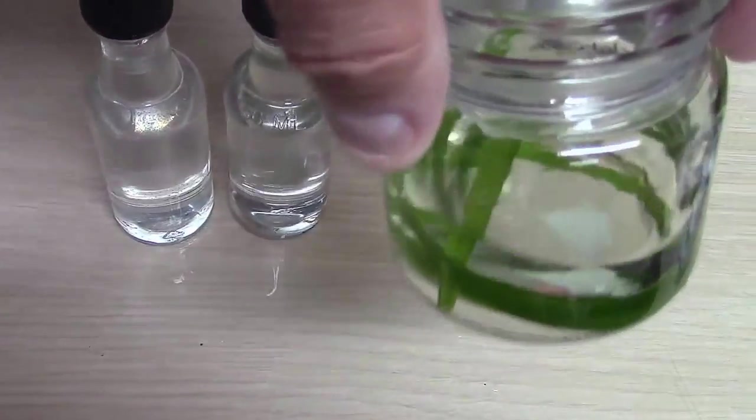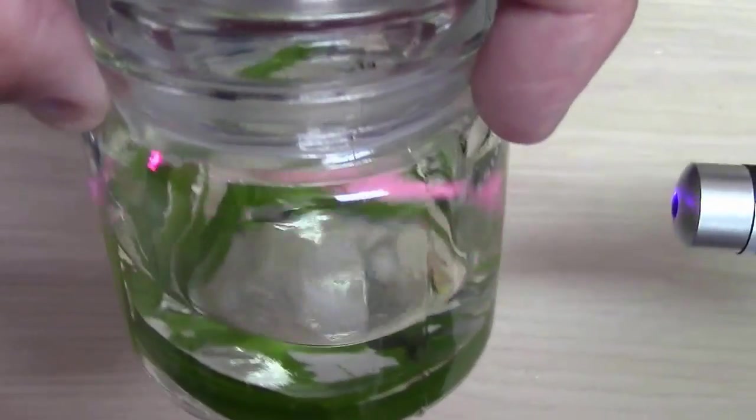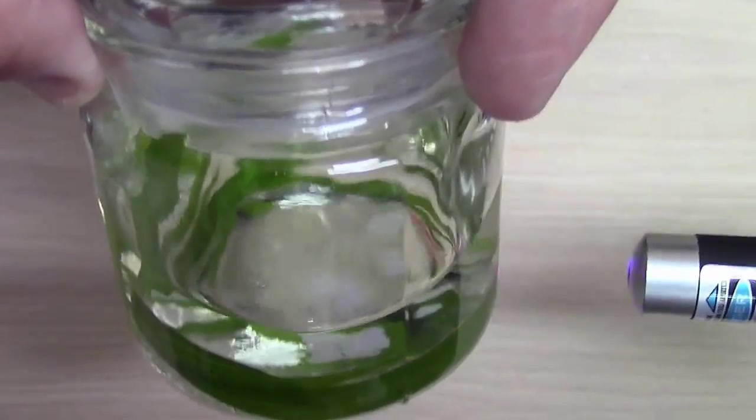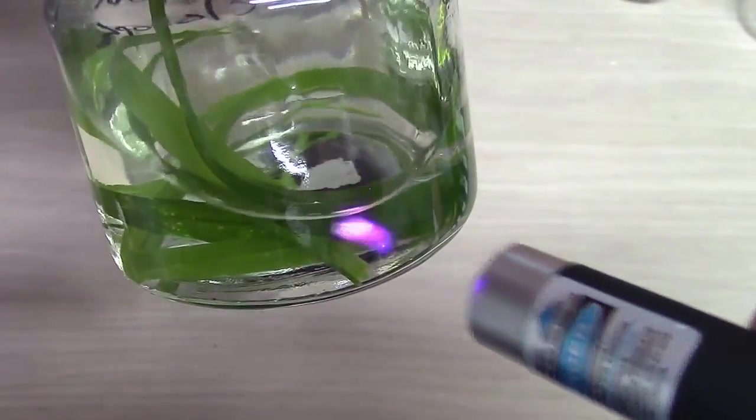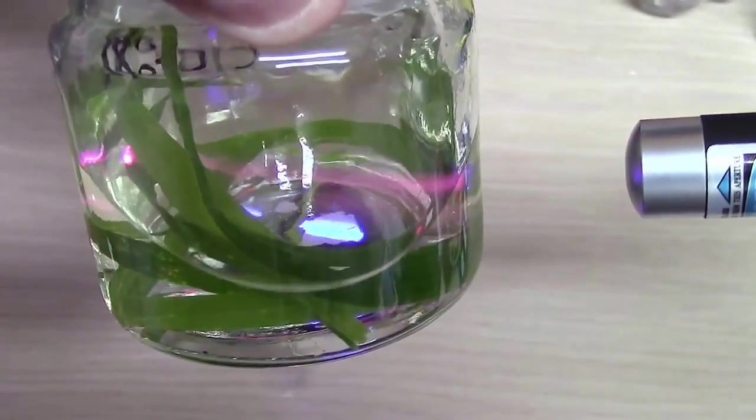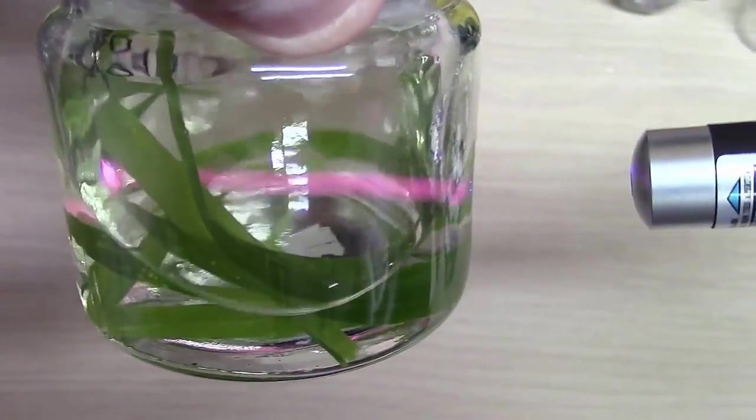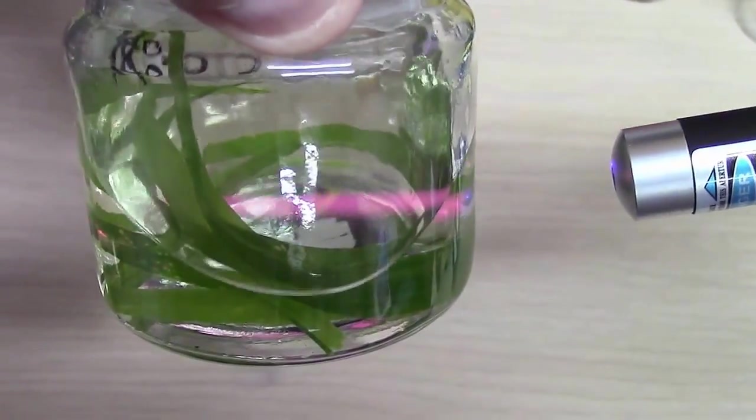You can already see though that when you put the UV laser on the grass, even the grass itself will emit a red color. And once you leave it in long enough, this will be a really intense red. Right now it's starting to show a little bit better into the camera than it does in real life. So I'm going to let that sit for a while.